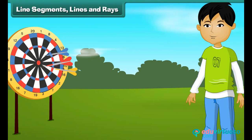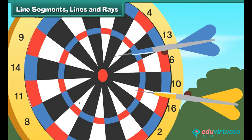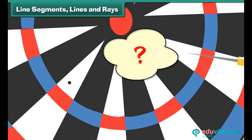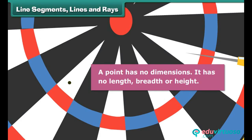Rahul perfects his aim by throwing darts at the dart board. Here is one such dart. Let us remove it. The dart has left a mark on the dart board. The mark is called a point. A point has no dimensions — it has no length, breadth or height.